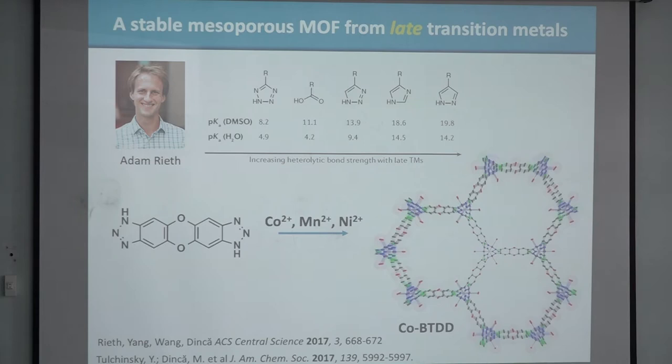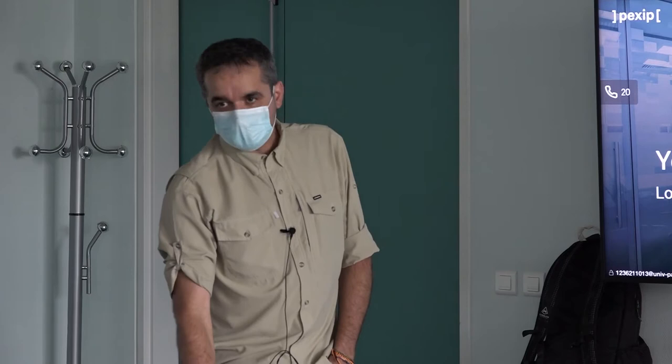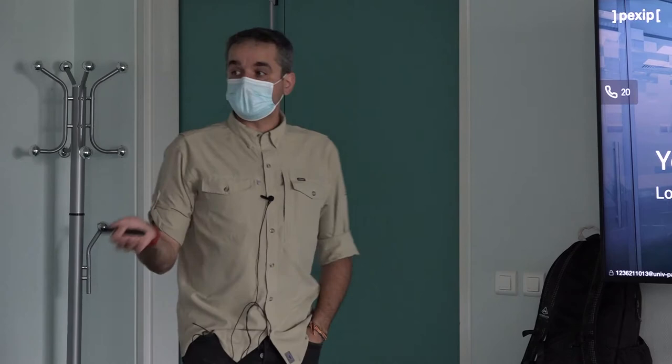One of my graduate students, Adam, took a ligand called BTDD and reacted it with cobalt or nickel to produce these hexagonal phases. They are incredibly stable to water — you can boil them in water, expose them to ammonia, or expose them to radicals of chlorine and bromine, and they're completely stable. The point is that you can make very stable MOFs if you just think about basic principles.